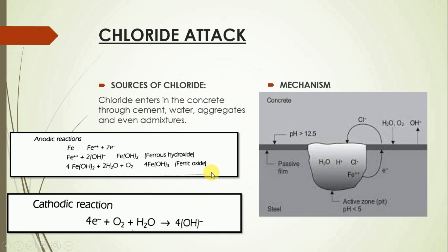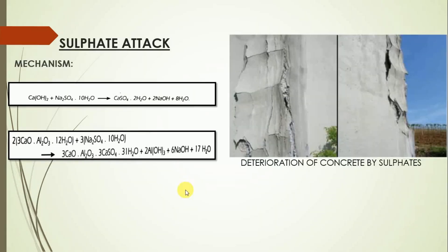Third: sulphate attack. Sulphate attack is one of the major causes of concrete failure. Sulphates occur naturally in the environment — in sea water, groundwater, and soils. The mechanism of sulphate attack on concrete involves two chemical reactions. The first reaction is the combination of sulphate ions with calcium ions to form gypsum.